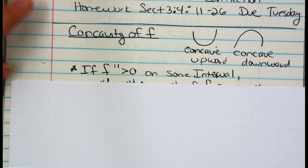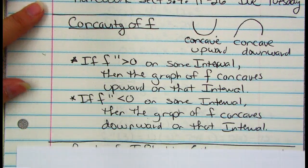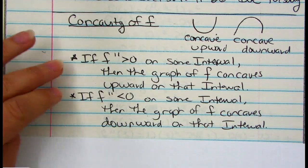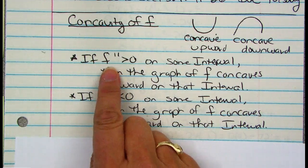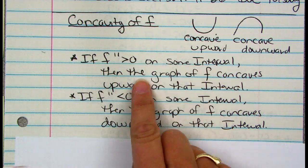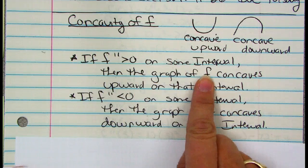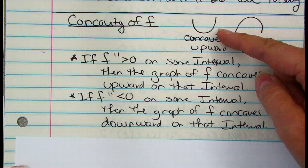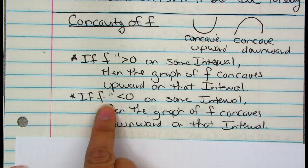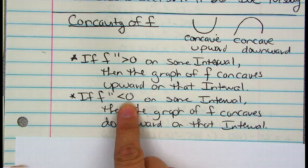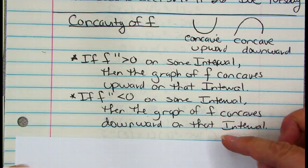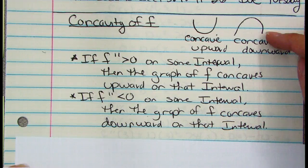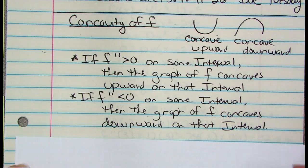Now, how to find concavity of my original function f. There are two items here. It states if the second derivative outputs are greater than zero on some interval, then the graph of f concaves upward on that interval. Or, if f double prime outputs are negative — less than zero — on some interval, then the original graph of f concaves downward on that interval. We'll work through a problem to see what that looks like.